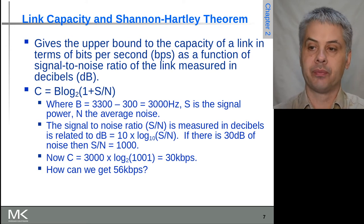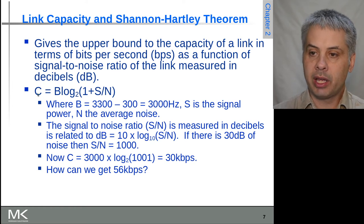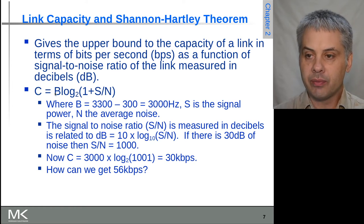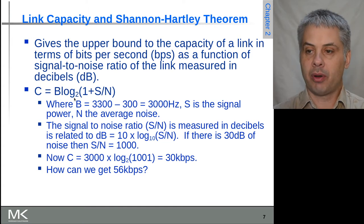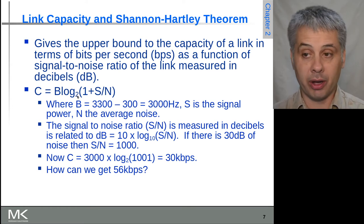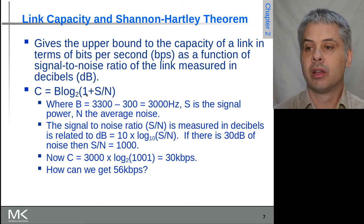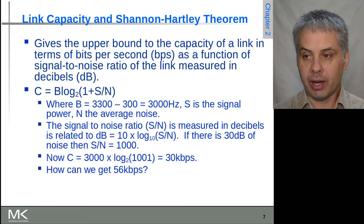If we have a look at the formula, C is the channel capacity equals B (the bandwidth) multiplied by the base-2 log (because we're thinking about bits, so binary data) of 1 plus S (the signal strength) divided by N (the noise level).